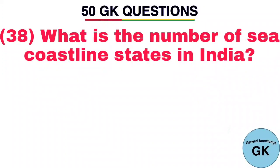Question number 38. What is the number of sea coastline states in India? Answer: Nine.